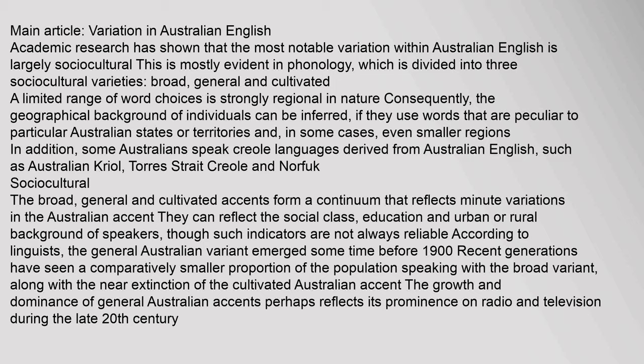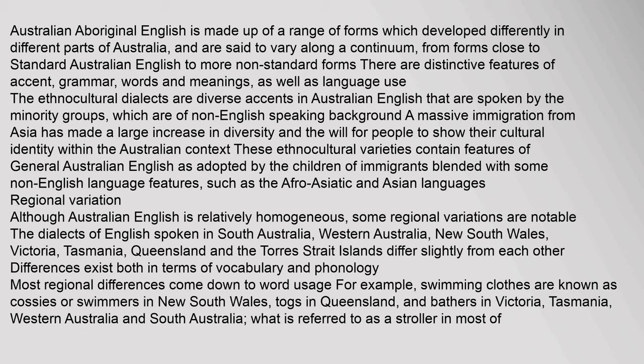Australian Aboriginal English is made up of a range of forms which developed differently in different parts of Australia, varying along a continuum from forms close to standard Australian English to more non-standard forms. There are distinctive features of accent, grammar, words and meanings, as well as language use. The ethnocultural dialects are diverse accents in Australian English spoken by minority groups of non-English speaking background. A massive immigration from Asia has increased diversity, and these ethnocultural varieties contain features of general Australian English blended with some non-English language features, such as Afro-Asiatic and Asian languages.